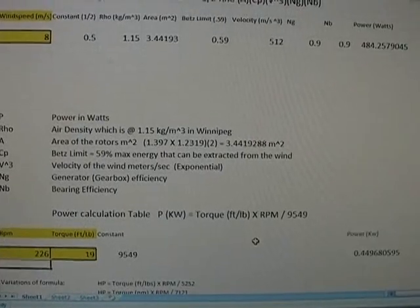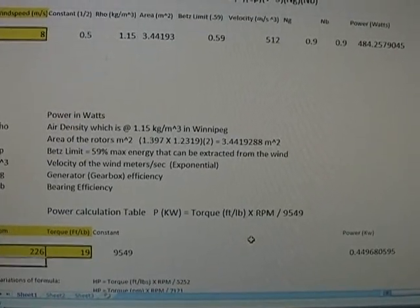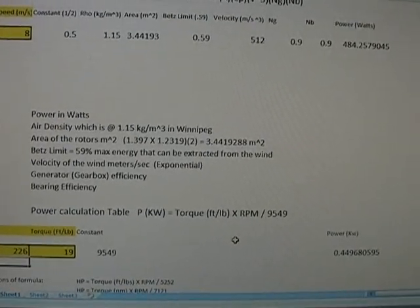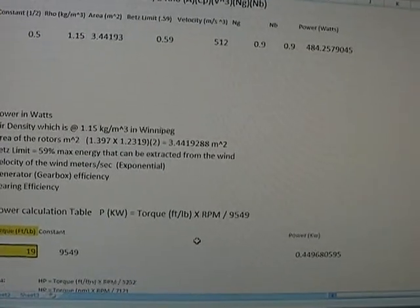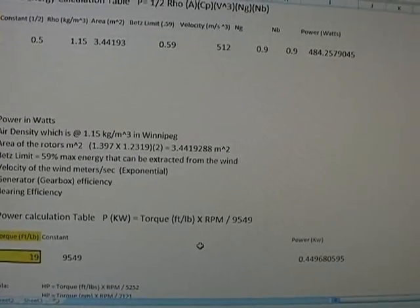We loaded that machine down to 226 RPM. We were measuring 19 foot-pounds of torque, which calculates out to 449 watts of power.